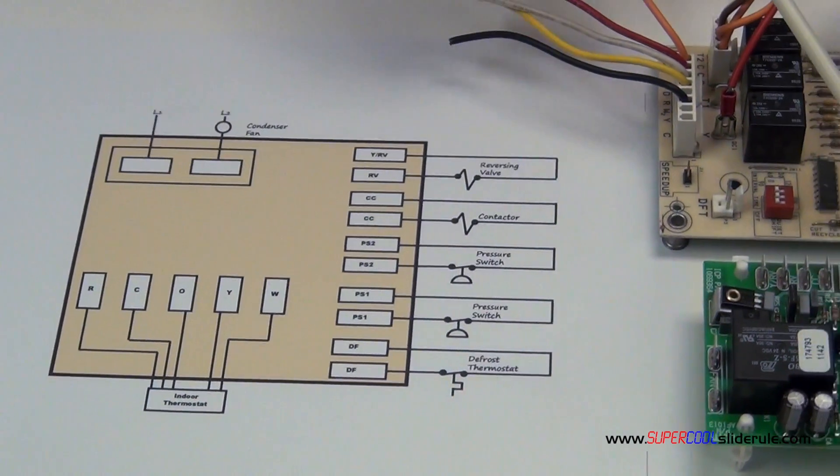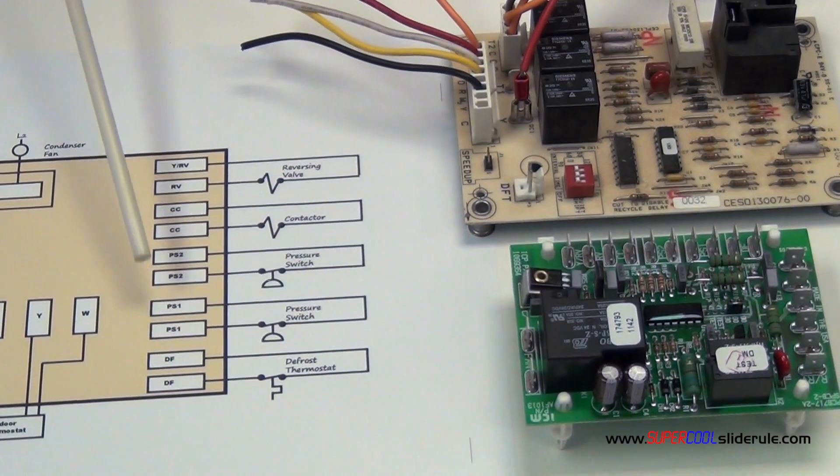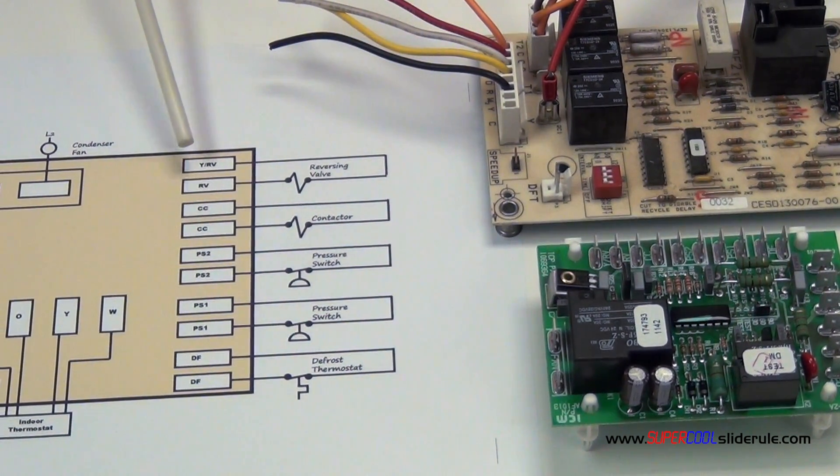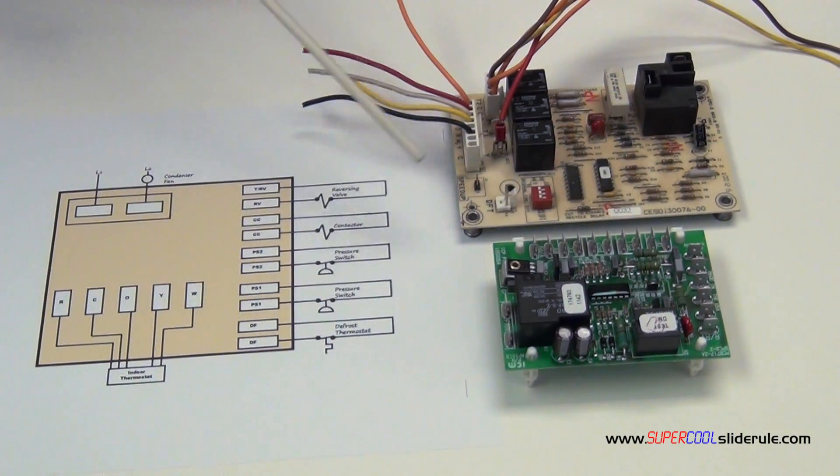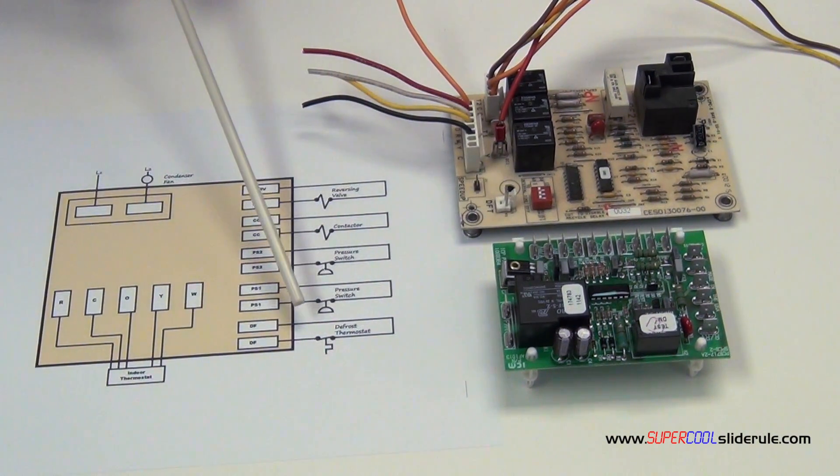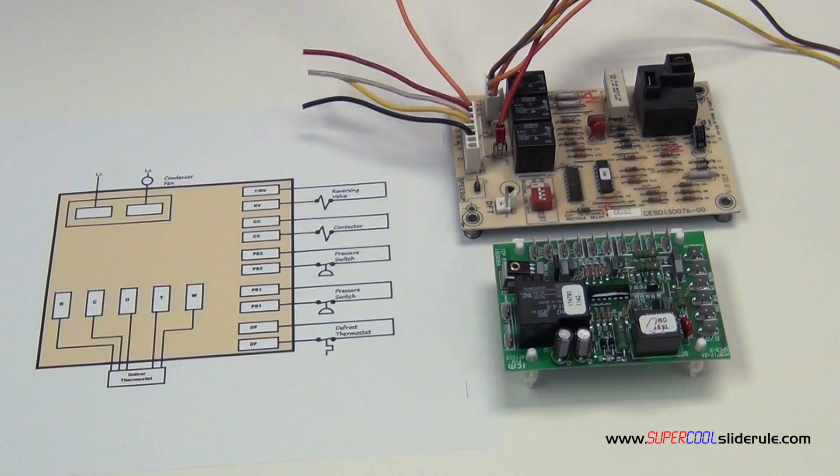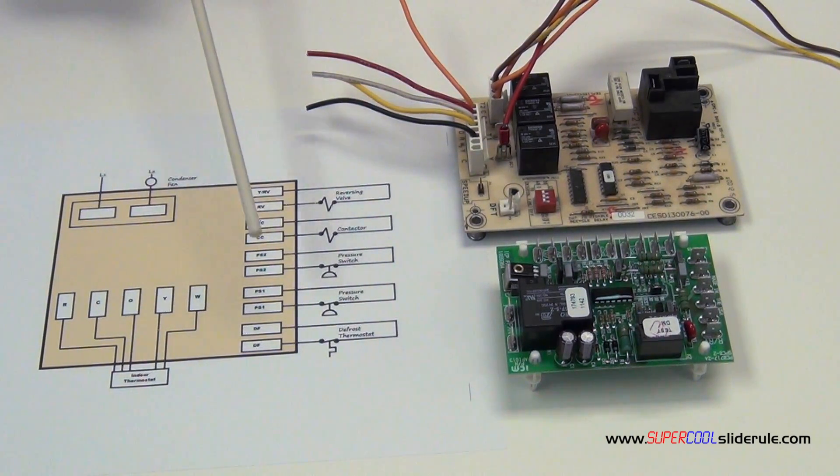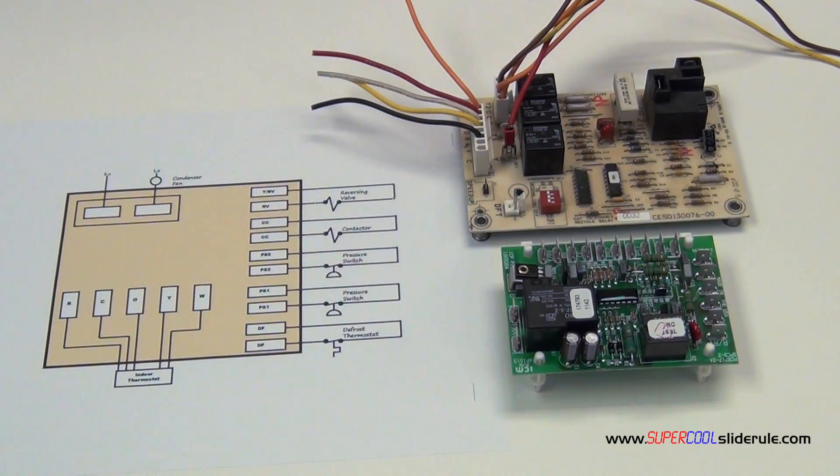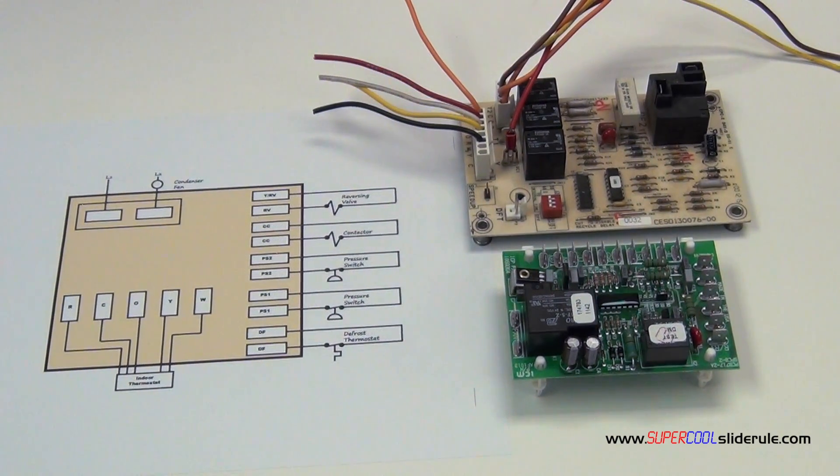Now this board right here, these are the terminal designations. We have a defrost thermostat, and on this board it's right here, DFT, a defrost thermostat. The purpose of this switch is to tell the board how long the unit has been running when the outdoor temperature is below 32 degrees.